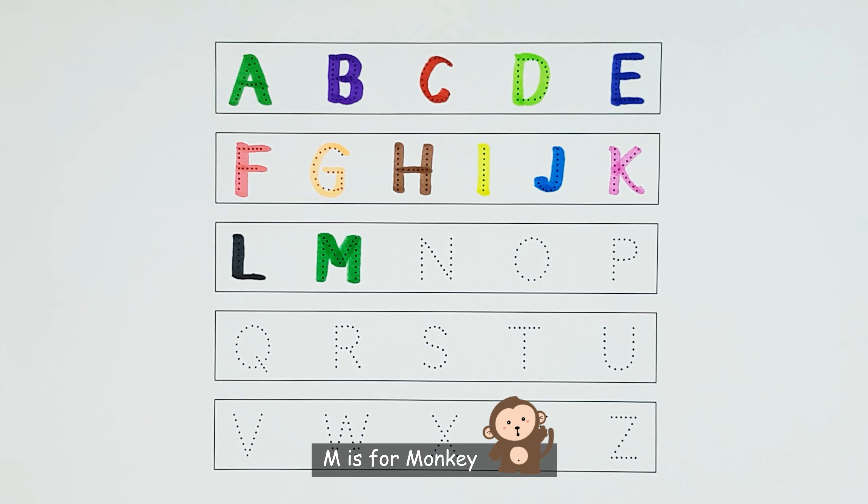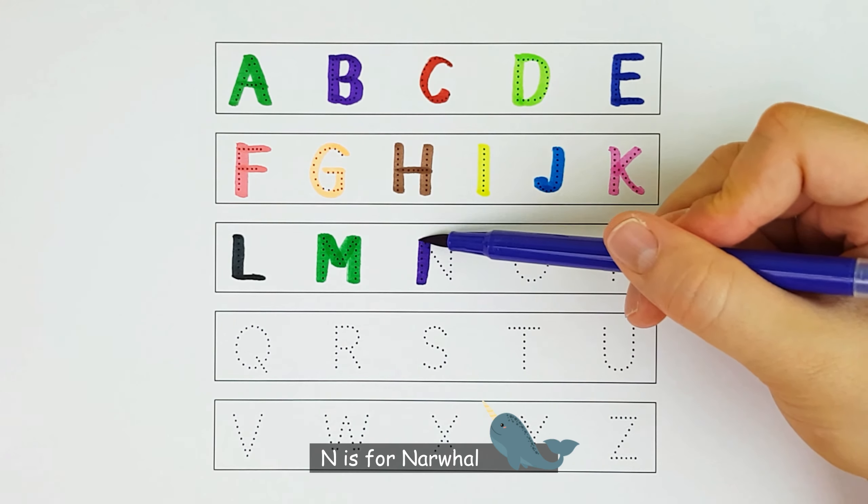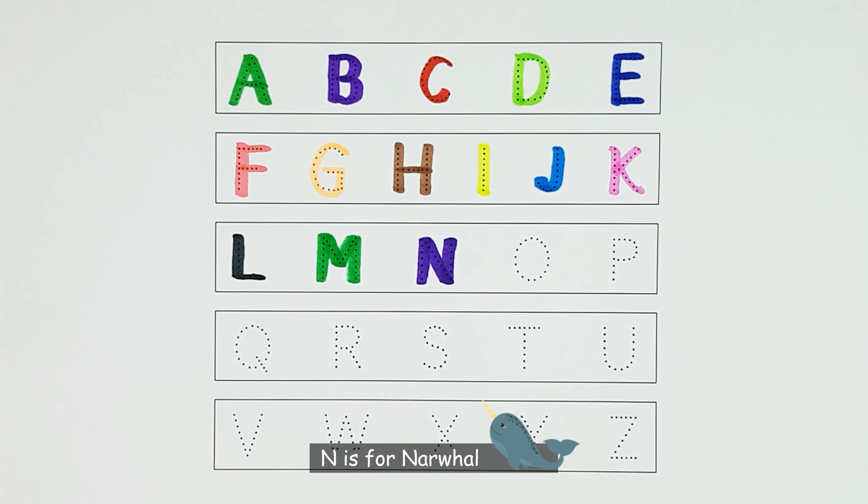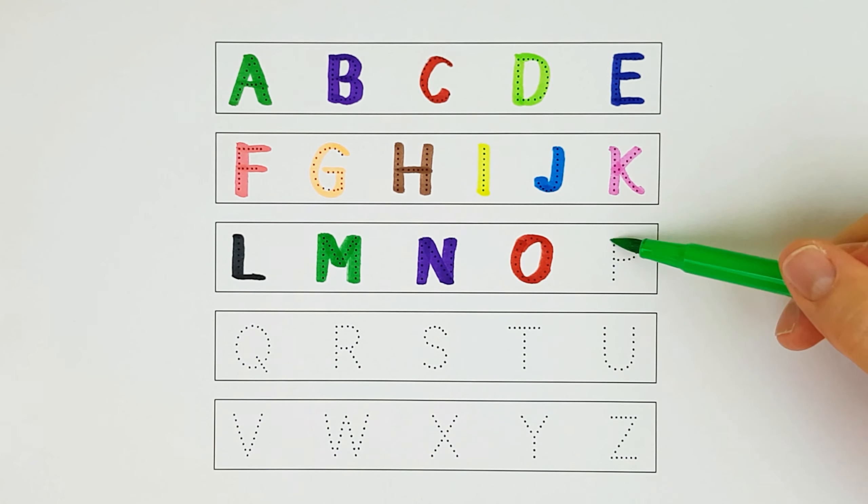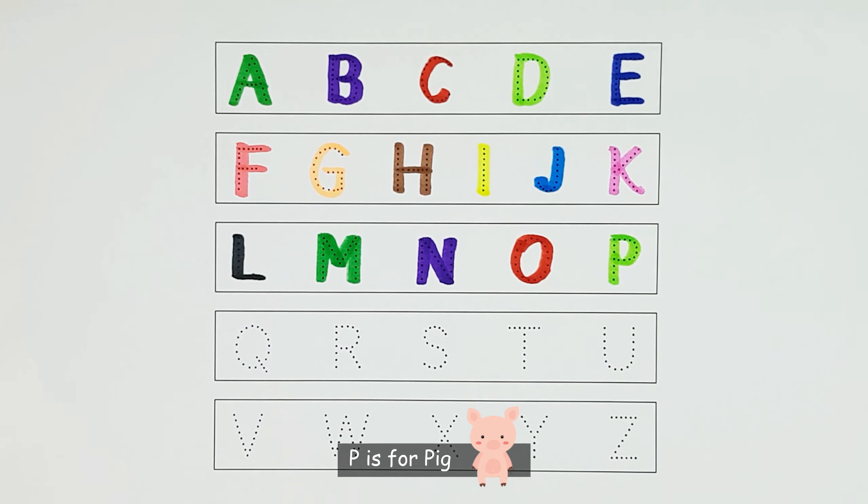M is for monkey. N is for narwhal. O is for octopus. P is for pig.